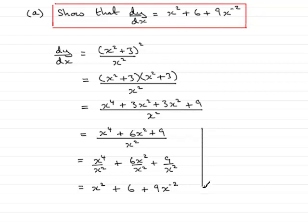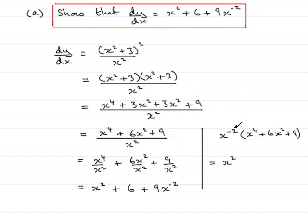Some of you might do this a different way. When you get to that stage, you can bring the x² up and write it as x⁻², so you have x⁻² multiplied by x⁴ + 6x² + 9. Expanding out: x⁻² times x⁴ is x²; x⁻² times 6x² gives 6x⁰, and anything to the power 0 is 1, so that's just 6; and x⁻² times 9 gives 9x⁻². So either method results in the same answer.